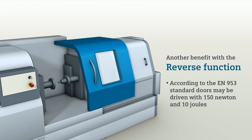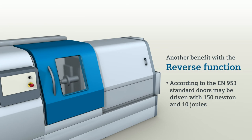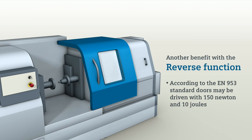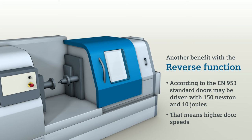Because reversing doors may be driven, for example, with 150 Newton and 10 joules, according to the EN 953 standard, and that means higher door speeds.